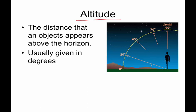First off, altitude. Altitude, as you can imagine, means how high. It's how high an object appears above the horizon. It's typically given in degrees because, just like in math class, if you are on the x-axis you are at zero degrees.